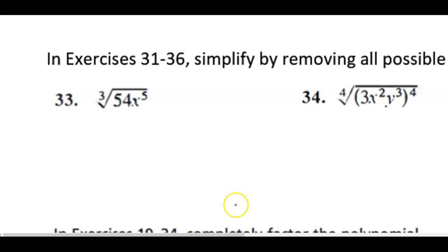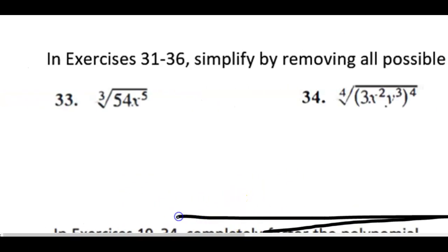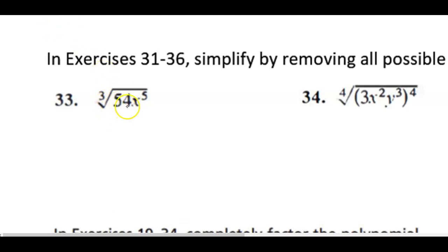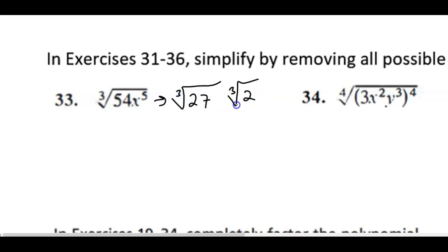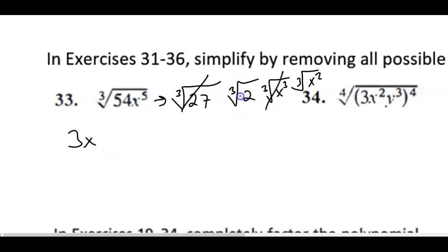For this first problem we need to simplify by removing all possible factors from the radical. This is a cube root, so what I like to do is break it apart. For example, 54 is 27 times the cube root of 2, because 27 is a perfect cube. Then for x to the fifth, I break that apart into the cube root of x cubed and the cube root of x squared. The cube root of 27 is 3, and the cube root of x cubed is x. The other radicals are not perfect cubes so they stay underneath the radical.